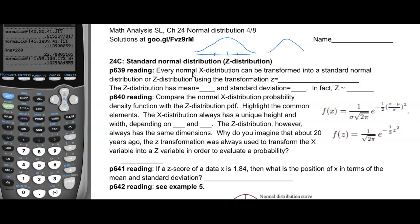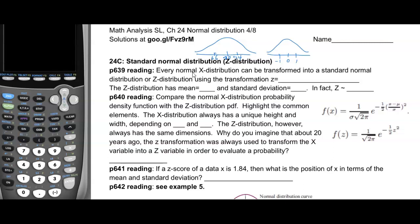The z-distribution is a special normal distribution where instead of having values like 70, 74, and 66 on the x-axis, we put zero in the middle and ±1 around it. The mean is exactly zero and the standard deviation is exactly one. That is the z-distribution, as opposed to an x-distribution. Every normal x-distribution can be transformed into a standard normal z-distribution using z = (x − μ) / σ.